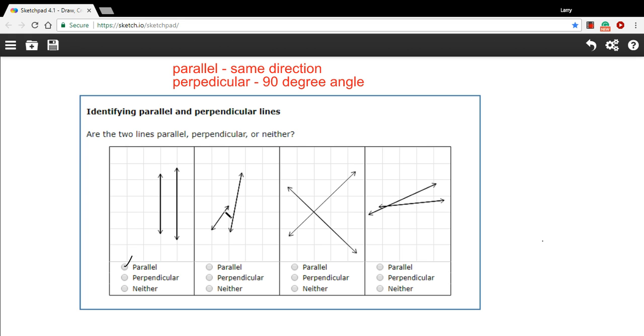Here we have two lines. They're not drawn in all the way, but these are going to cross somewhere around here, but they're not crossing at a 90 degree angle. So these are neither.